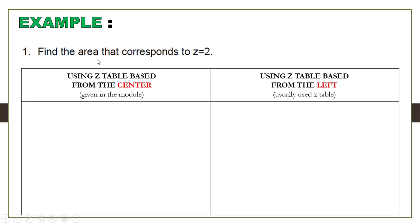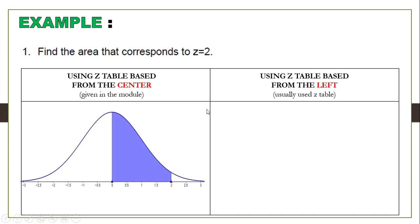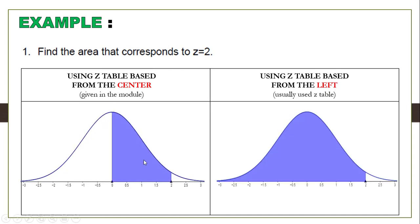On this particular question — find the area that corresponds to Z is equal to 2 — it would look like this on different tables. Observe that the Z-Table based from the center gives the area from 0 to 2. There is a big difference between the two tables; they have different answers for the corresponding area when Z is equal to 2.